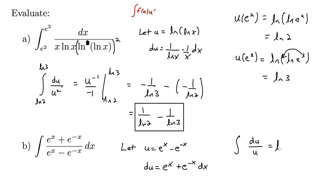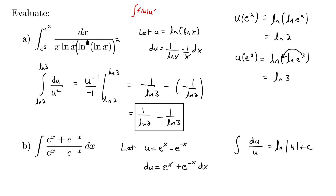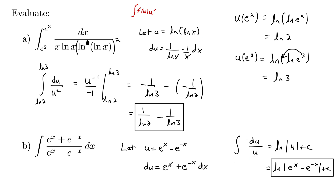The integral of du over u is natural log of the absolute value of u plus C. Back-substituting for u gives us natural log of the absolute value of e to the x minus e to the negative x, all plus C. Sometimes these integrals can look pretty daunting, but with the correct u-substitution they come out to something quite nice and approachable.